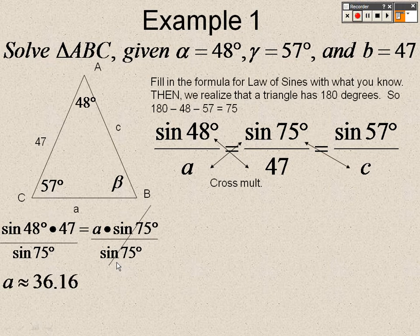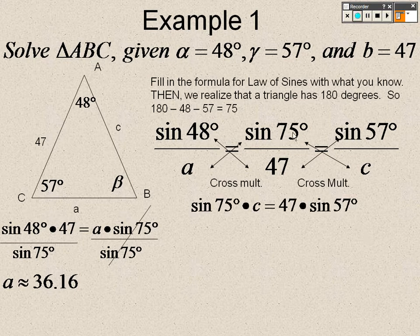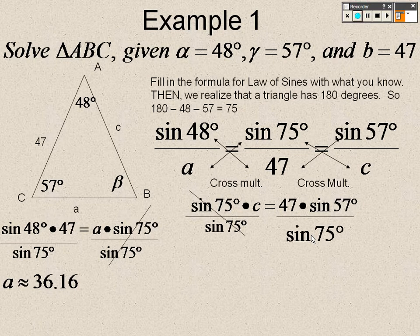Then I can cross-multiply these two, figure out what C is. So when I cross-multiply those two, I get sine of 75 times C equals 47 times sine of 57. So I just divide both sides by sine of 75. And I get about 40.81. And that's literally the law of sines.